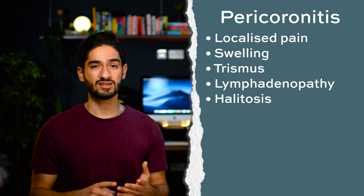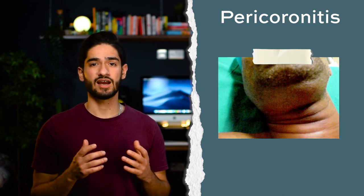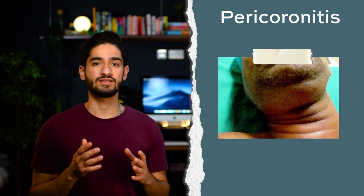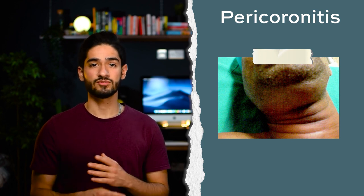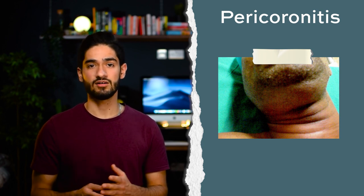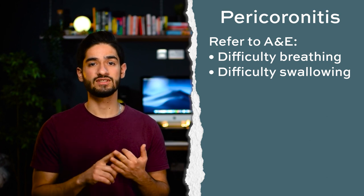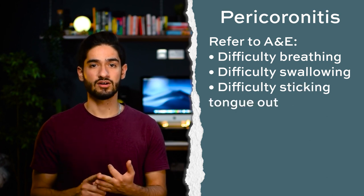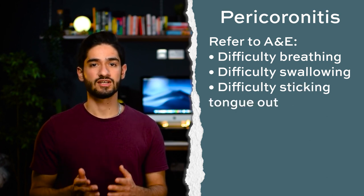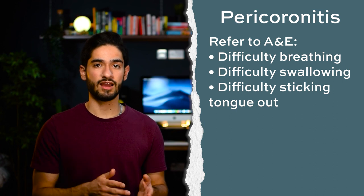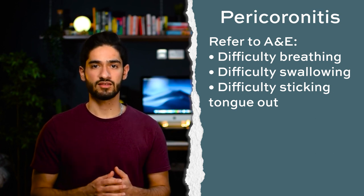It's not uncommon to also see lymphadenopathy, bad breath or pus. Sometimes patients come in with very large swellings and you'll need to know when it's an emergency. The signs that would make you consider referring them straight to A&E are difficulty breathing, difficulty swallowing or difficulty sticking their tongue out. Swellings in the floor of the mouth can be especially dangerous as they can block the airways - this is known as Ludwig's angina and can be a cause of death.